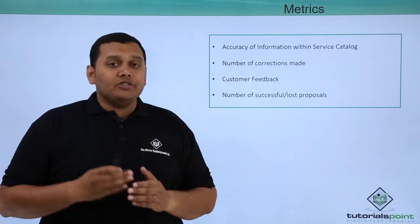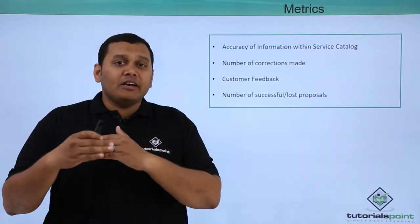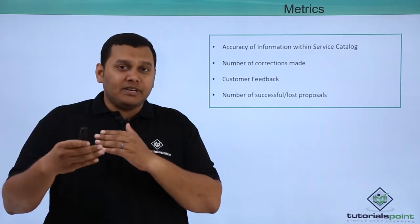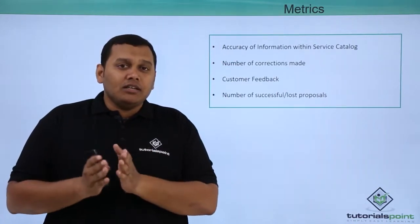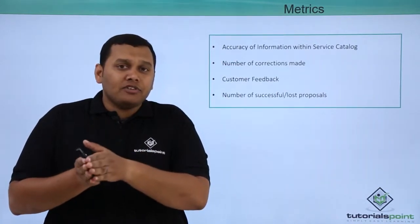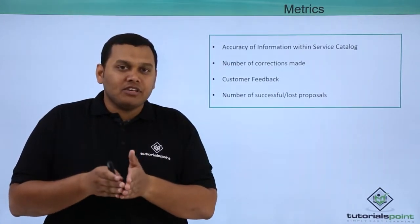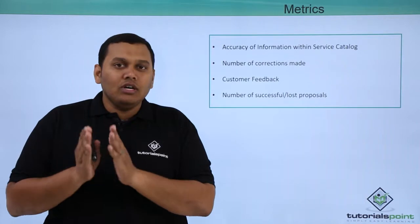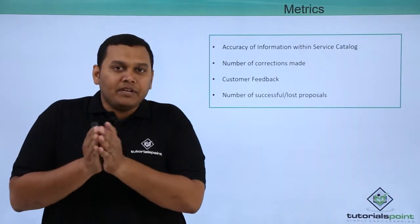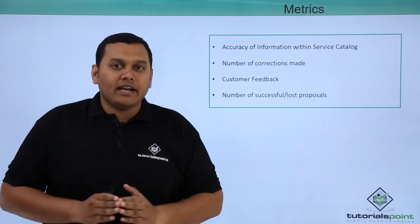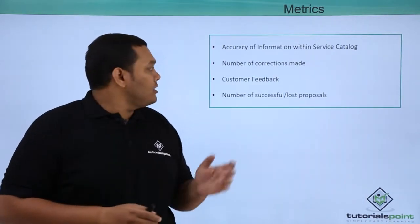The second metric is number of corrections made. Based on the number of corrections made — that means the amendments of the services or the termination of services — this also influences service catalog improvement.